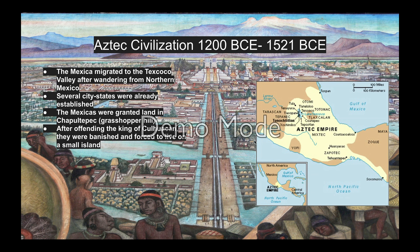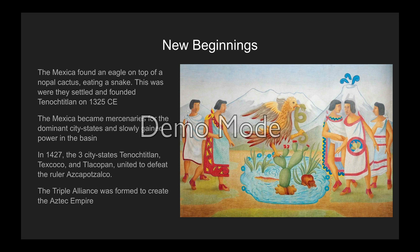Now we're in the Aztec civilization — the Mexica people. They migrated to the Texcoco Valley after wandering from northern Mexico or their mythical region known as Aztlan. The Mexicas were granted land in Chapultepec — Grasshopper Hill — but after offending the king of Culhuacan, they were banished and forced to live on a small island. They found an island in the middle of a lake, where they saw an eagle eating a snake on top of a nopal cactus, and founded Tenochtitlan in 1325 CE. The Mexica became mercenaries for dominant states, and in 1427, three city-states — Tenochtitlan, Texcoco, and Tlacopan — united to defeat the ruler Azcapotzalco, forming the Triple Alliance and creating the Aztec Empire.